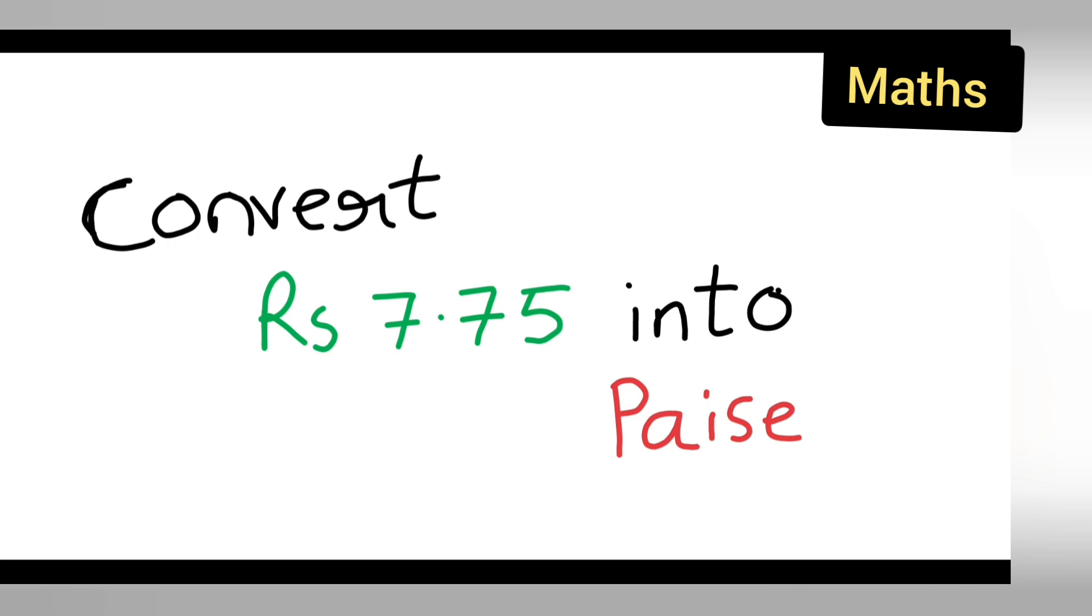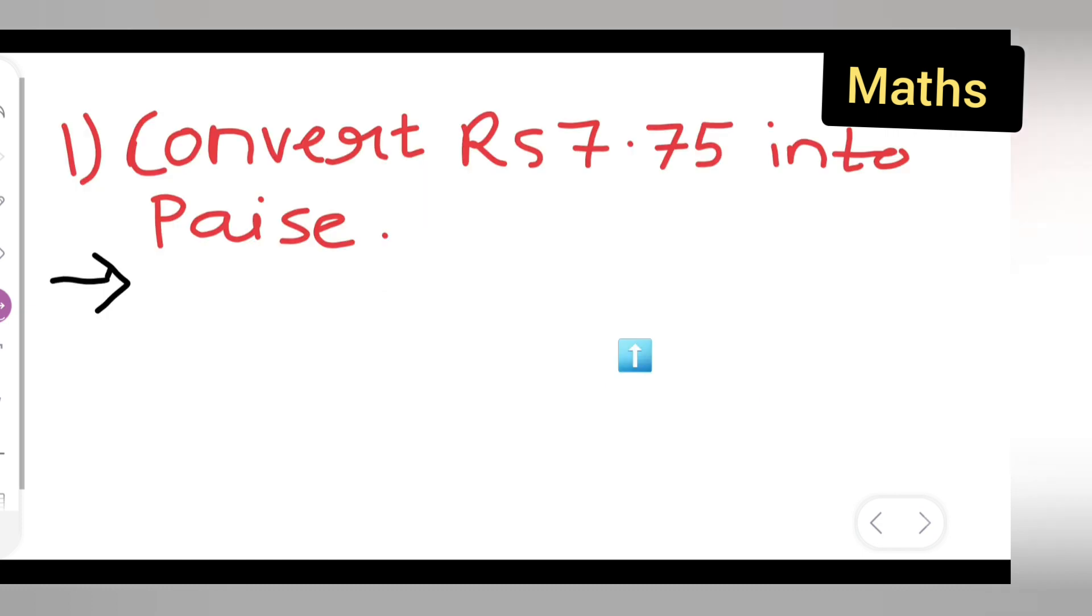Let us see how to convert Rs. 7.75 into Paise. First, what you have to do is take down the question: convert Rs. 7.75 into Paise.